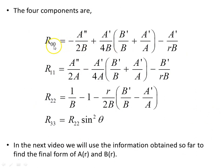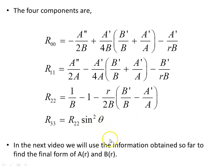The four components of the Ricci tensor are: R_00 (just derived), R_11, R_22, and R_33 — which is just R_22 multiplied by a factor of sin²θ. In the next video, we'll use this information to find the final forms of A(r) and B(r). The remaining Ricci tensor components follow the same procedure as just demonstrated for R_00.